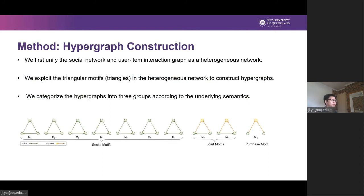To construct hypergraphs, the first step is to formulate the high-order information among users. We first align the social network and the user-item interaction graph in social recommendation systems, and then build hypergraphs over this heterogeneous network. Unlike existing models which construct hyperedges by unifying given types of entities, our model constructs hyperedges according to the graph structure. In this paper, we only focus on triangular motifs because of the ubiquitous triadic closure in social networks. The figure shows all the used triangular motifs which represent the high-order relations. We categorize them into three groups according to the underlying semantics, including social motif, joint motif, and purchase motif.